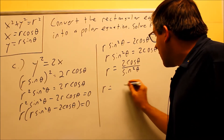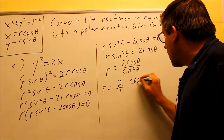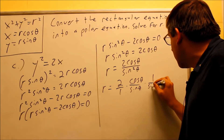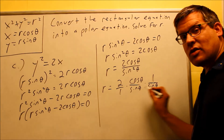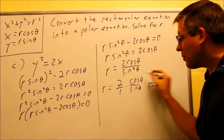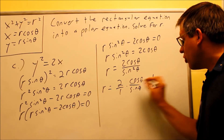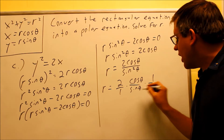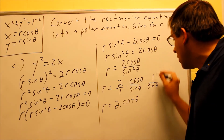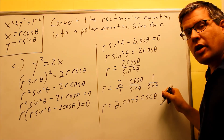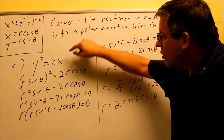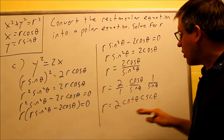To apply trig identities, I separate this as 2 times cosine theta over sine times 1 over sine. Since cosine over sine is cotangent, and 1 over sine is cosecant, the expression becomes r equals 2 cotangent theta cosecant theta. Depending on the teacher or program, the earlier form may be acceptable, but using identities you can write it as 2 cotangent theta cosecant theta. This is the polar equivalent of the original rectangular equation.